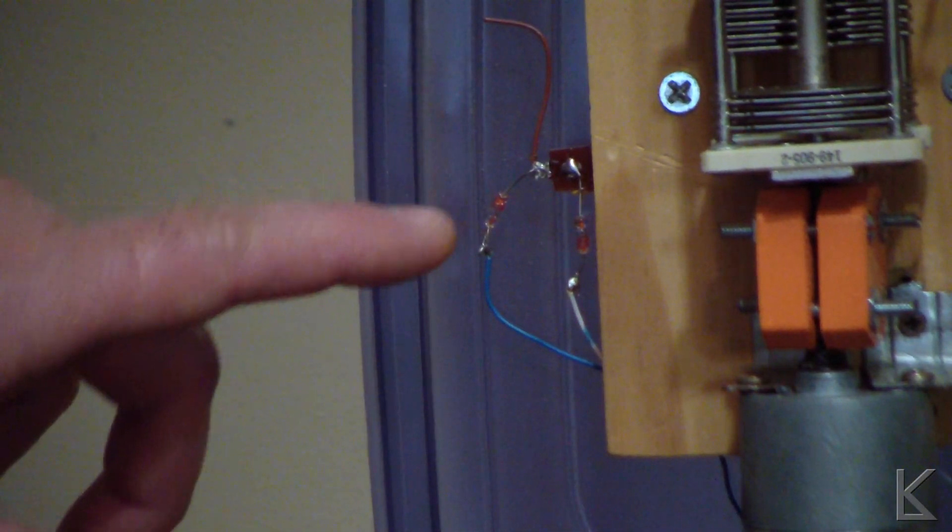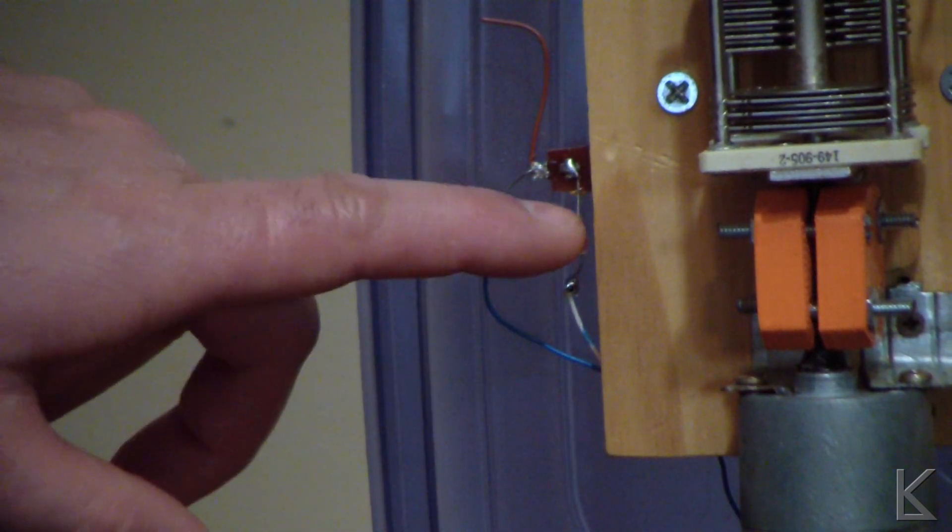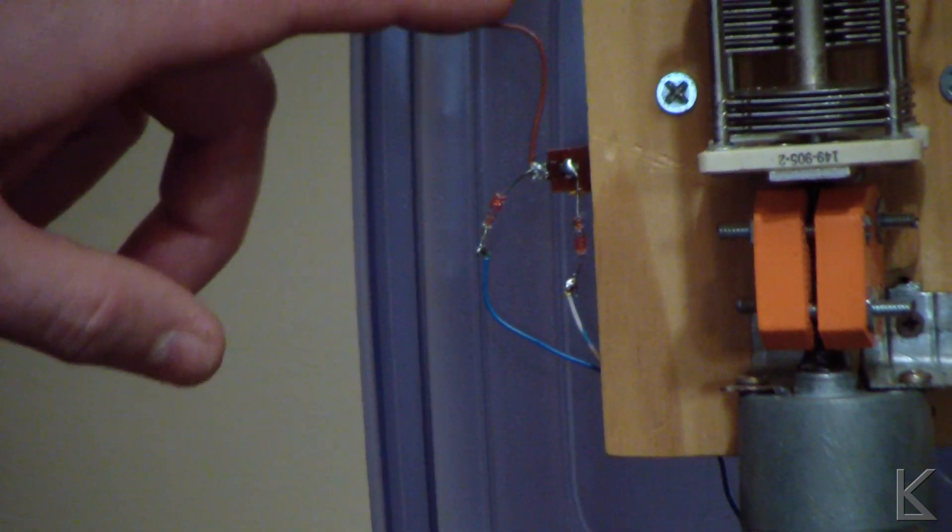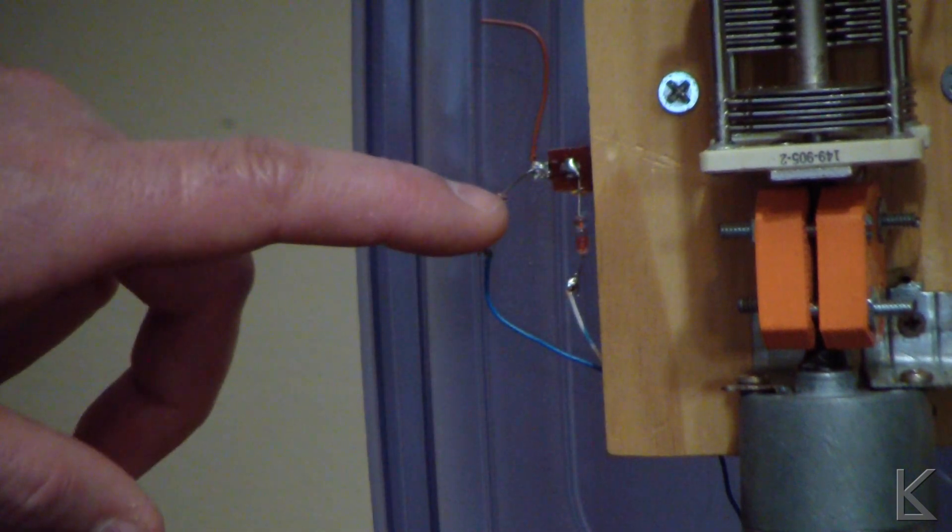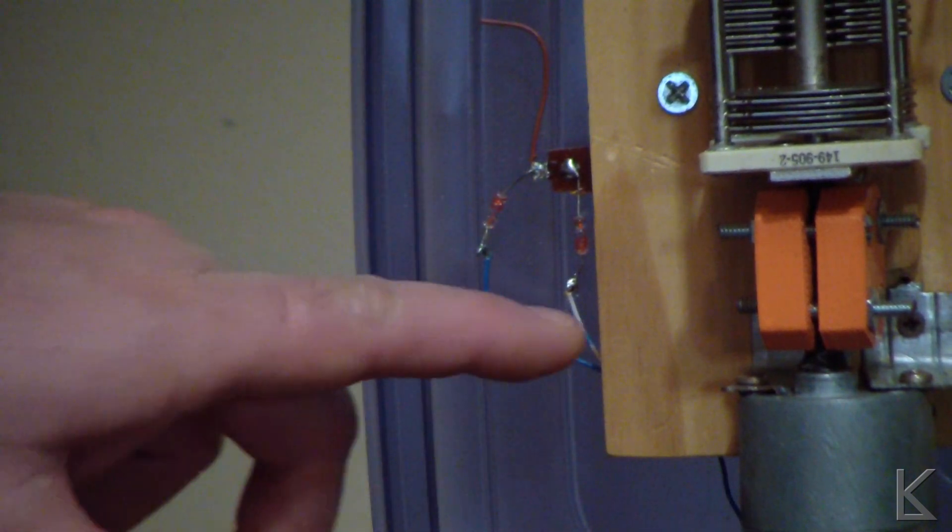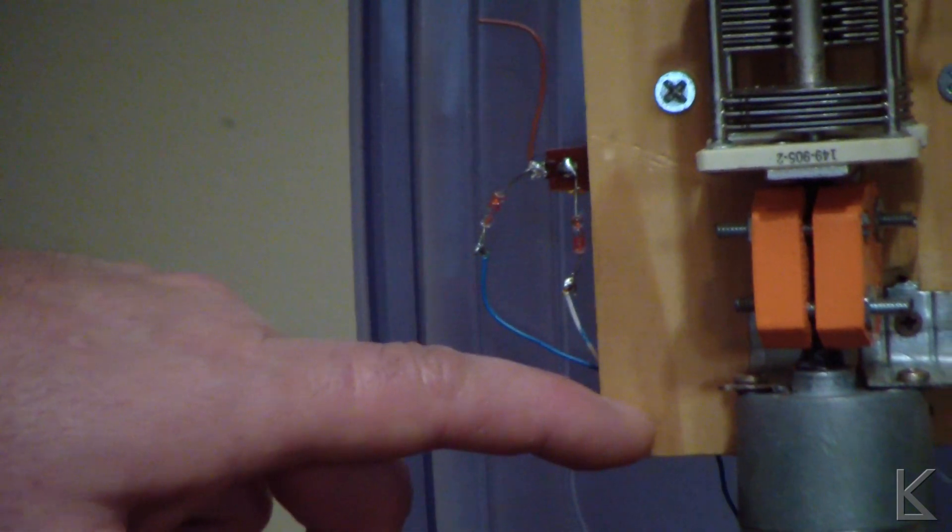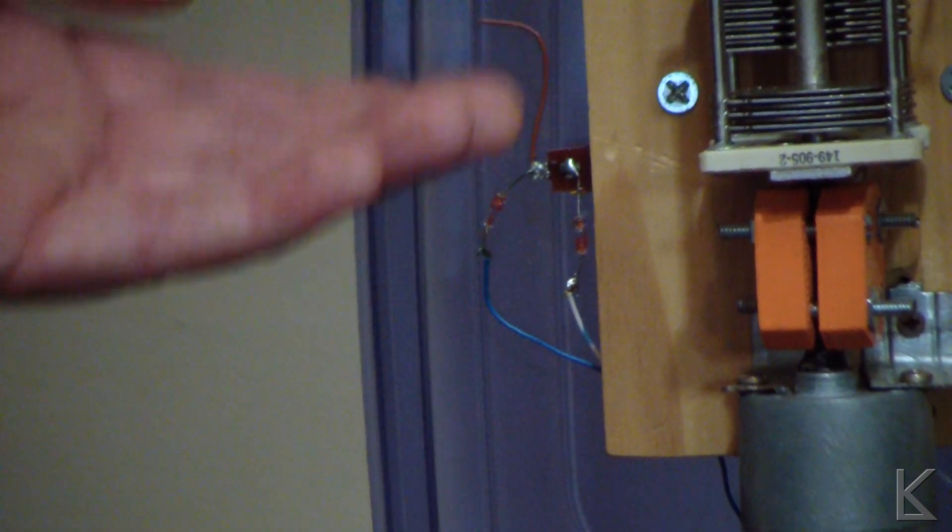Okay, so what we have here is a little terminal strip and two germanium diodes. And these diodes pick up the RF that this little piece of wire is picking up here from the loop and rectify it into DC voltage. Which then gets sent back on the control cable to the control box.